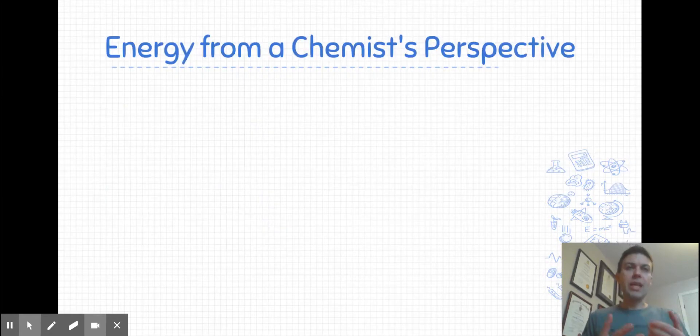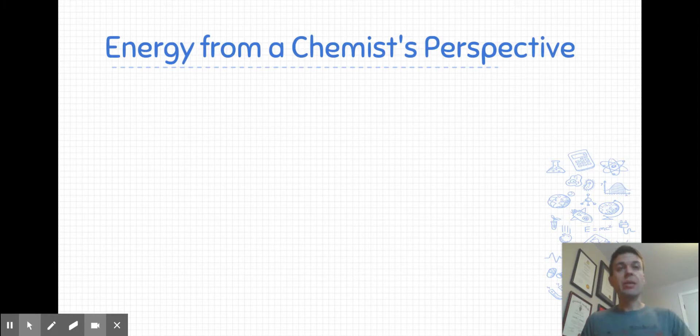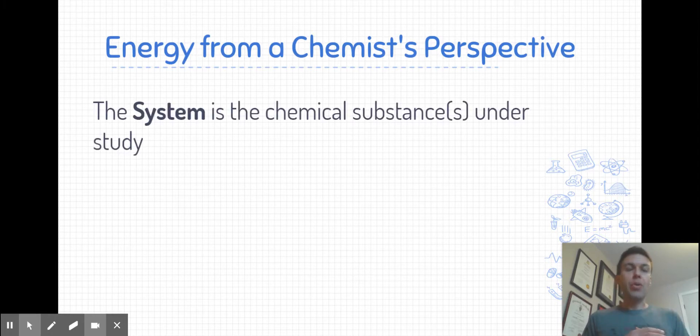When we're dealing with chemical systems and energy exchanges, it's very important to describe where the energy is coming from and where the energy is going. In chemistry, when we use the term system, that's referring to the chemical substances under study. Think of a chemical equation, a reaction. That chemical equation, those would be the chemicals under study.